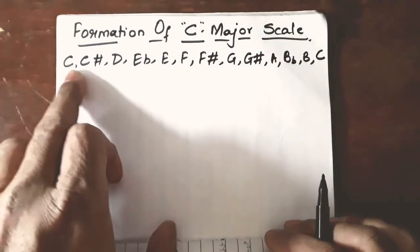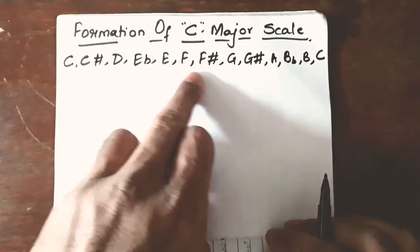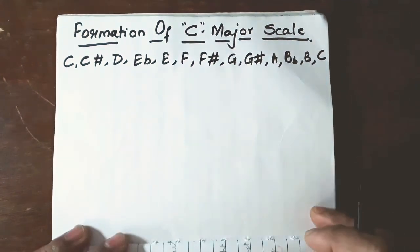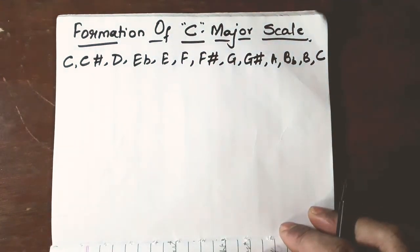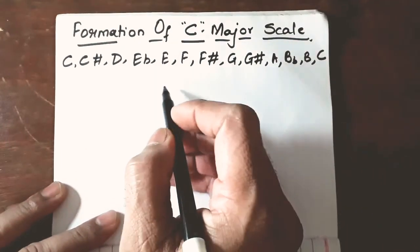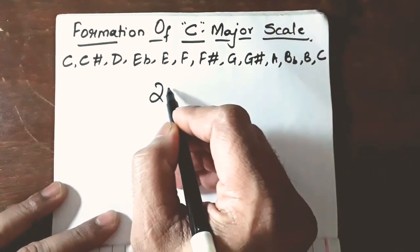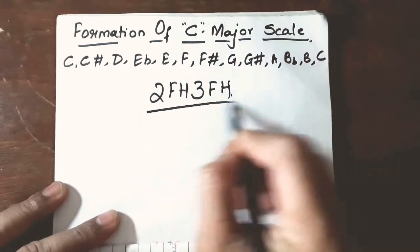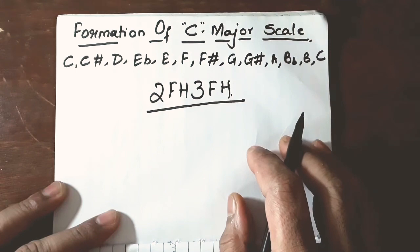So, 1, 2, 3, 4, 5, 6, 7, 8, 9, 10, 11, 12 and this is the next starting point right. Now let us apply the formula 2FH 3FH to the above chromatic scale.